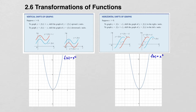To illustrate this, suppose we have the function f(x) = x². We'd like to graph g(x) = x² + 2. x² + 2 is going to be the same graph as x², but shifted up 2 units. So every point on the graph of x² is going to shift up 2 units.